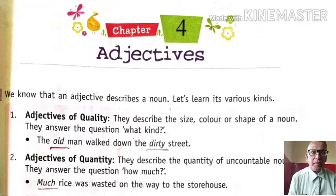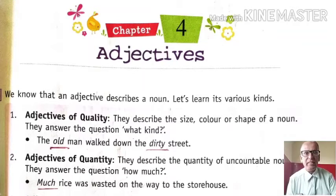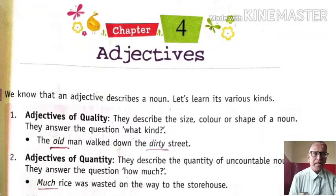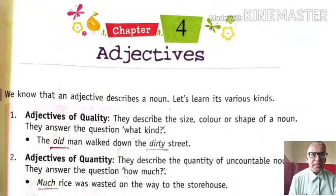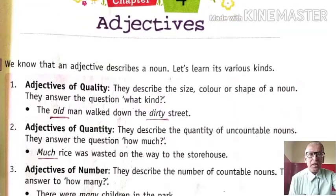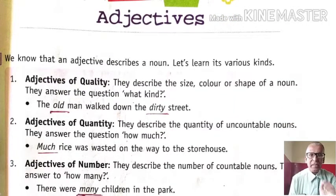We know that an adjective describes a noun. So adjective is a describing word. Sometimes it is defined as a describing word and it describes a noun. Let us have some kinds of adjectives. Adjectives of quality — they describe the size, color, or shape of a noun. They answer the question of what kind, so by asking what kind, the answer will be its adjective part.